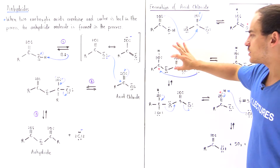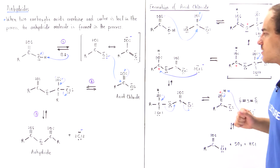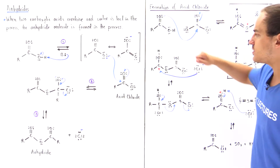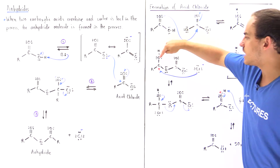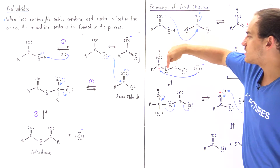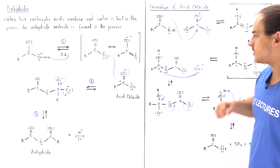There are two other resonance-stabilized structures on which the charge is delocalized onto this oxygen as well as this other oxygen here.